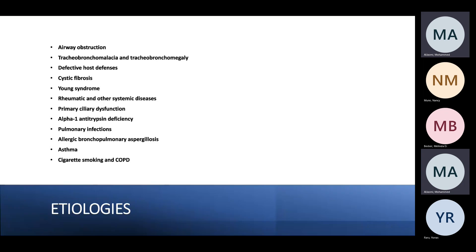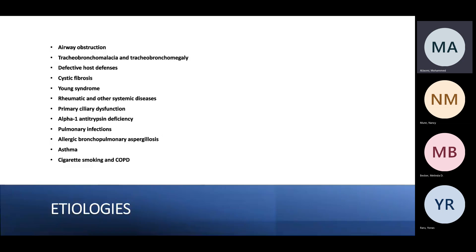Etiology is broad, but an important consideration is whether the bronchiectasis is diffuse over the lung or localized to one part. If localized, think more about foreign body, previous injury, or tumors. If diffuse throughout the lung, think about systemic diseases affecting all the lung — cigarette smoking, COPD, asthma, allergic bronchopulmonary aspergillosis (more often localized).